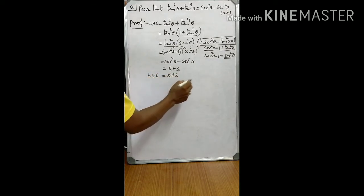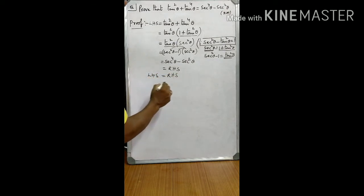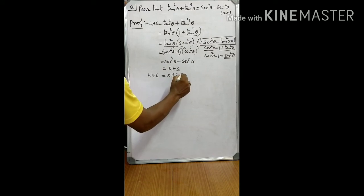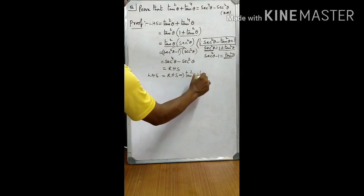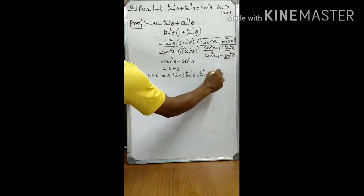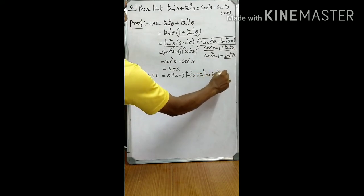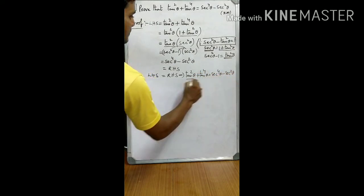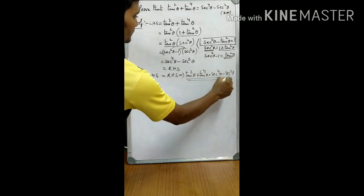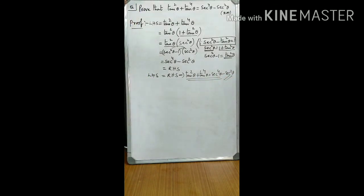Thus our statement is proved, which implies tan squared theta plus tan power 4 theta is equal to secant power 4 theta minus secant squared theta. Thank you.